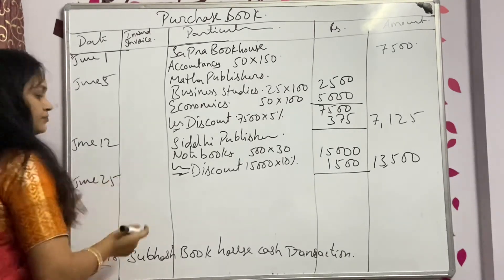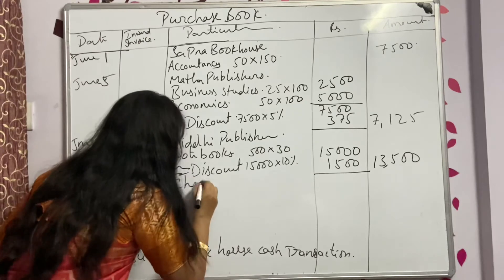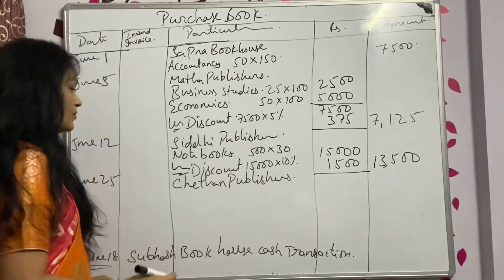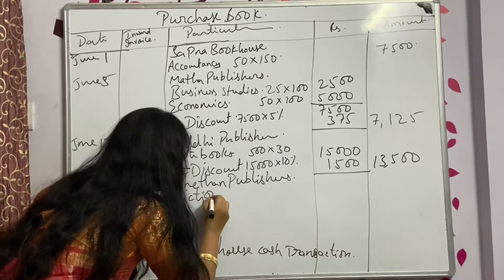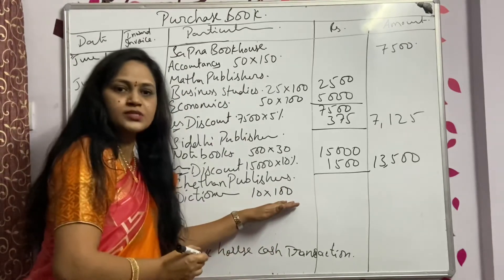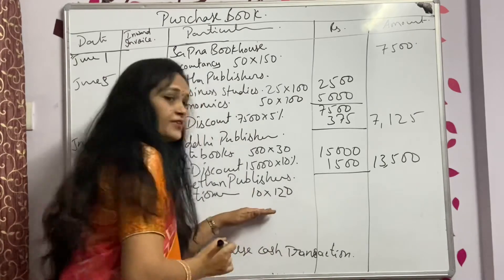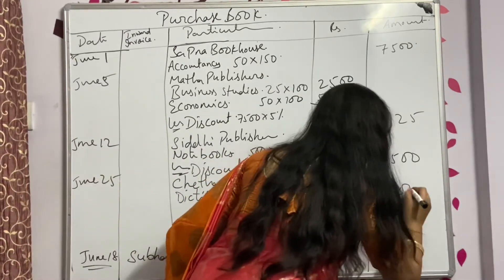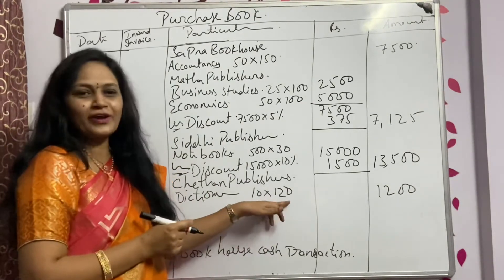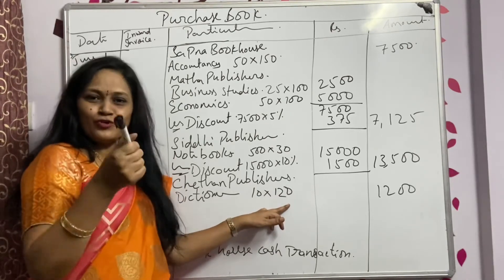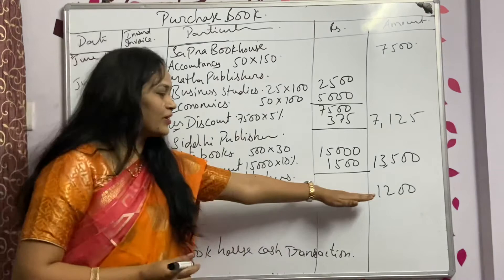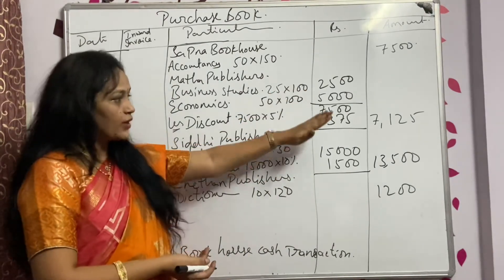June 25th: from Chetan Publishers, we bought 10 dictionaries at ₹120 each. Since there is only one item, 10 into 120 = ₹1,200. These are all the transactions for this question.